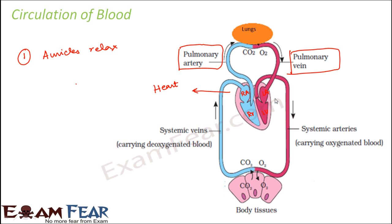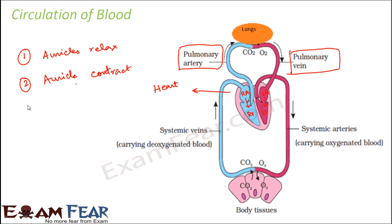When an object relaxes there is expansion; when it contracts there is less space. So the auricles, which are the receiving chambers, receive blood through relaxation. This is followed by the contraction of the auricles — the space inside reduces, so whatever blood is in the auricles flows into the respective ventricles. From the right auricle into the right ventricle, and from the left auricle into the left ventricle. During this stage, the bicuspid and tricuspid valves open up, allowing blood to flow from the auricles to the respective ventricles.